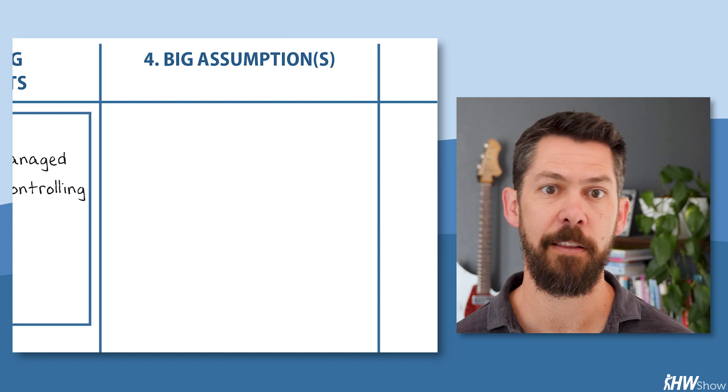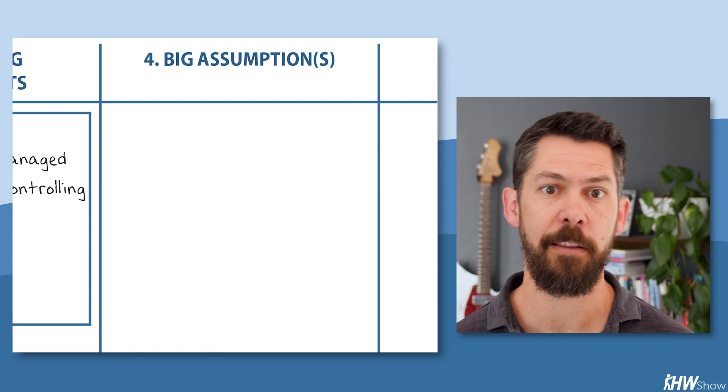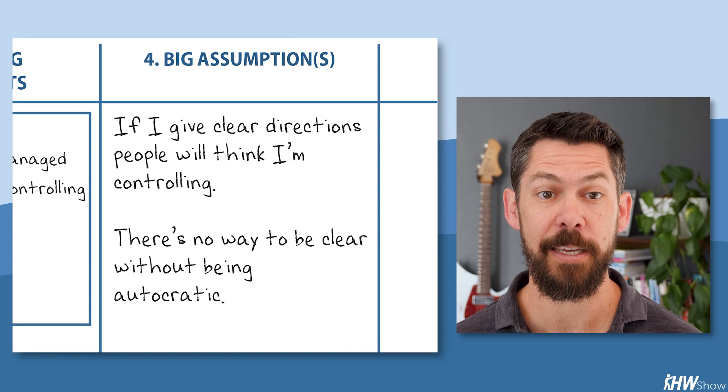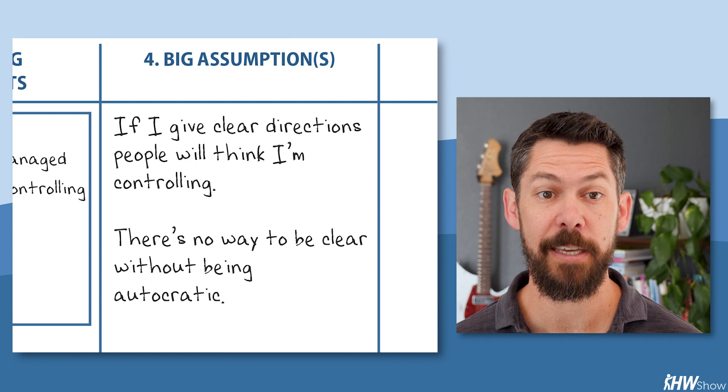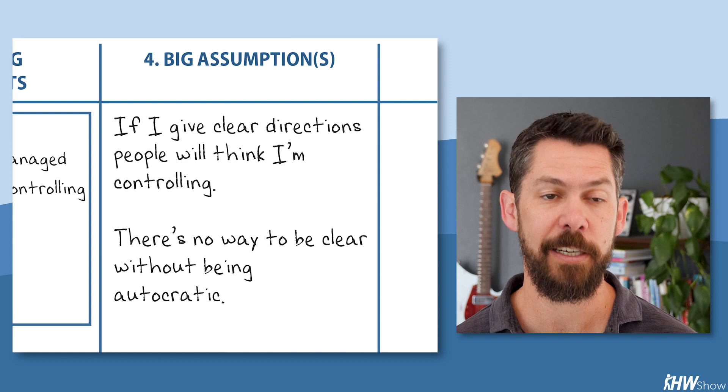Column four is the assumptions underlying the conflict between the hidden competing commitment and the visible commitment. Like, if I give clear directions, people will think I'm controlling. And there's no way to be clear without being autocratic. Stating the assumption strongly like this is helpful, similar, by the way, to what we talked about in episode 118 on resolving conflict using the evaporating cloud tool.